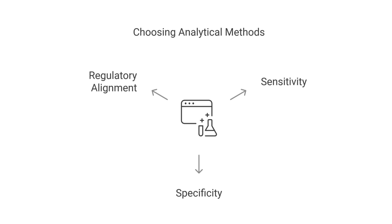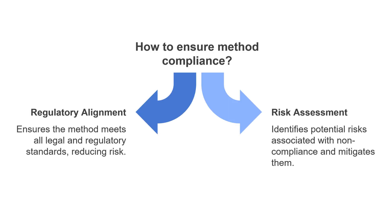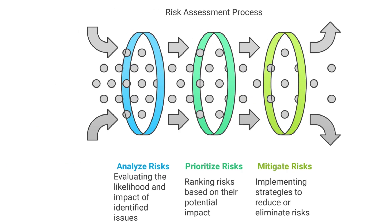Tip 3: Choose the right method. Select an analytical method that is appropriate for the intended application. Consider factors such as sensitivity, specificity, and the nature of the analytes. It's essential to ensure that the chosen method aligns with regulatory guidelines. Tip 4: Conduct a risk assessment. Perform a risk assessment to identify potential issues that could affect the validation process. This proactive approach allows for the implementation of controls to mitigate risks and ensures a smoother validation process.